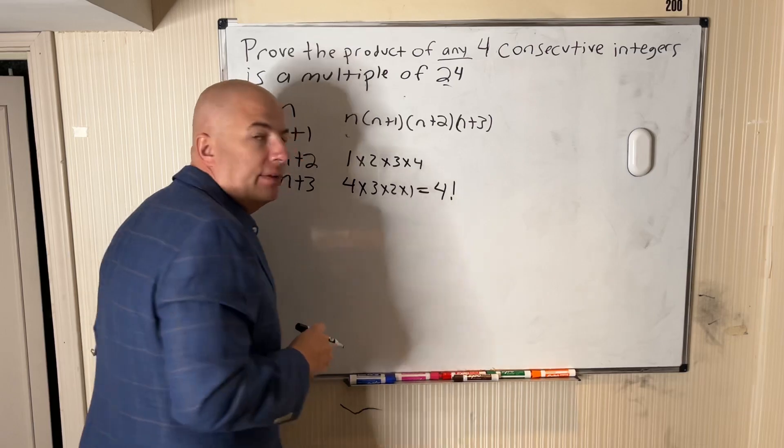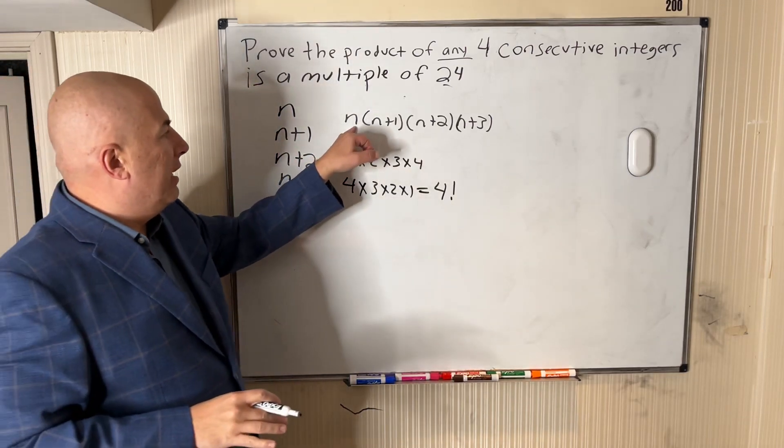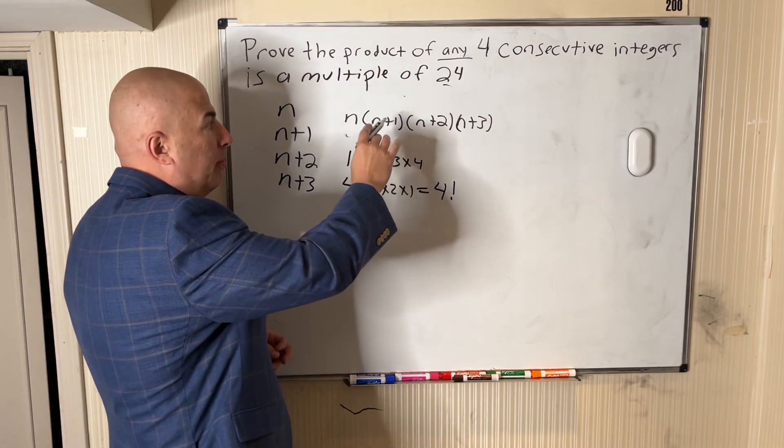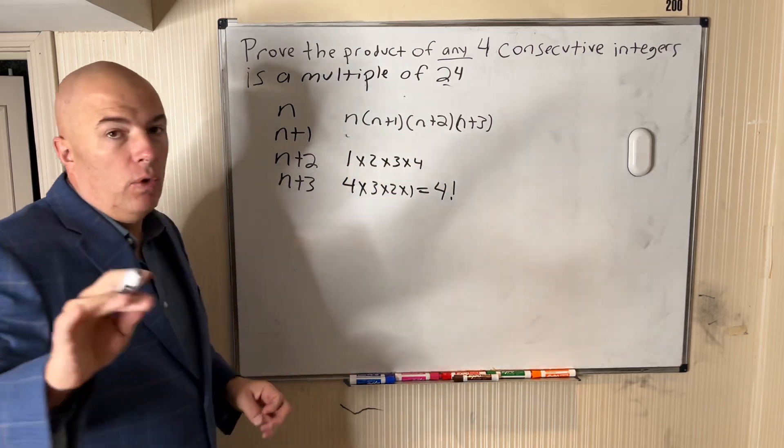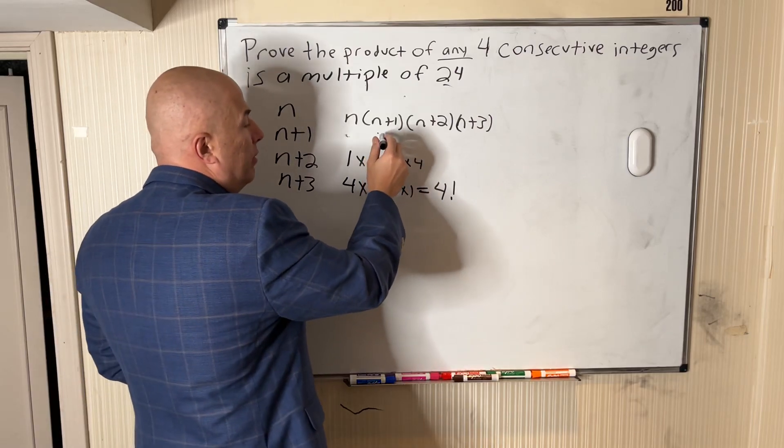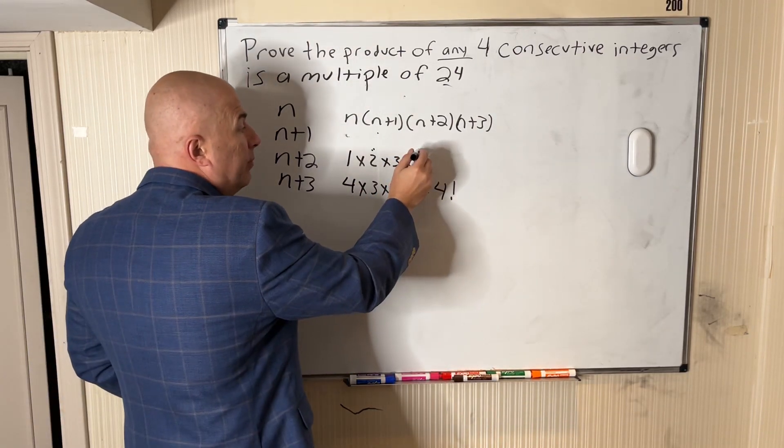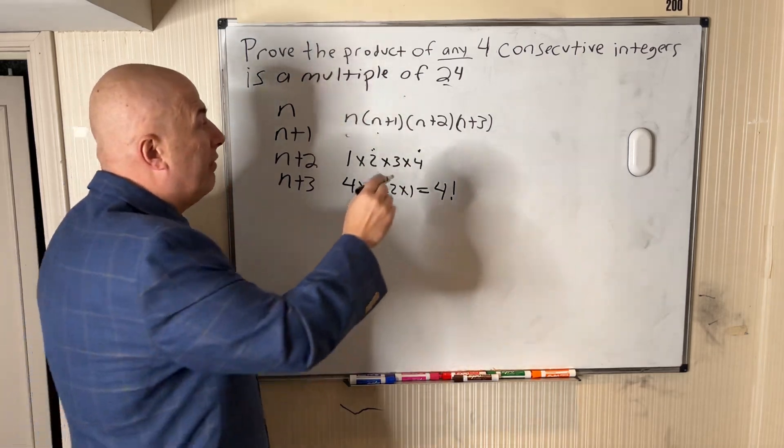So I don't care what we start with, there's going to be a sequence where we have a number, number plus 1, plus 2, plus 3. When you think about this, one of these numbers will always be a multiple of 2, one of them will always be a multiple of 4, which means one of them has to be a multiple of 3.